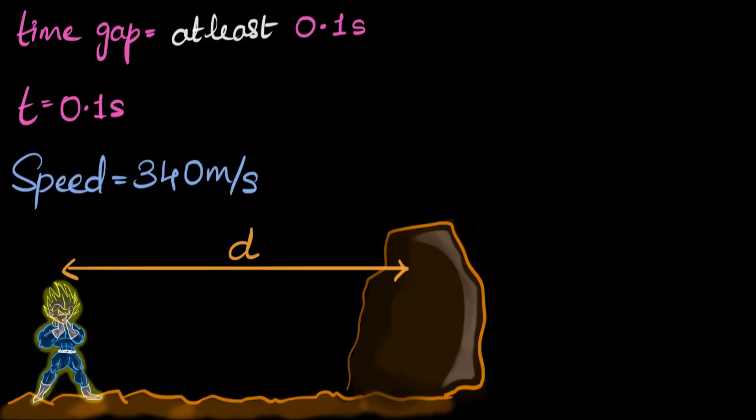Well, we know one connection between speed, time and distance. And that connection is speed equals distance over time. And so maybe we can use this formula and substitute the numbers and find the value of d.